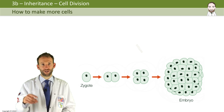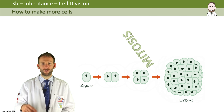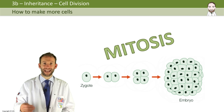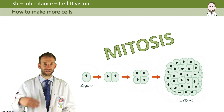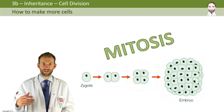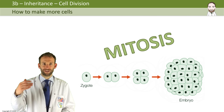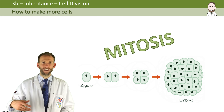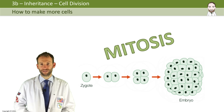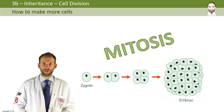So one cell became two, two became four, four became eight, eight became 16, 16 became 32, and so on, to get to the billions of cells that you are today.